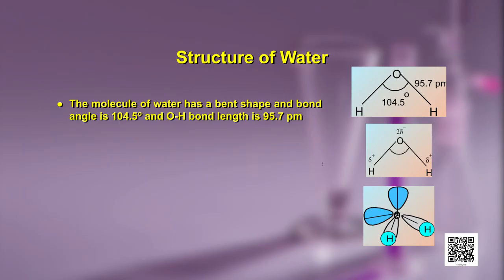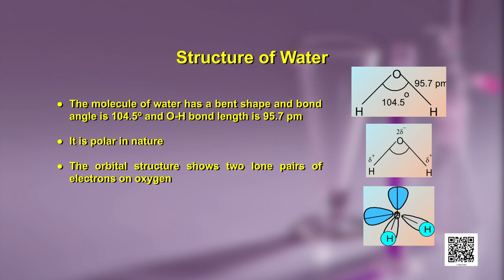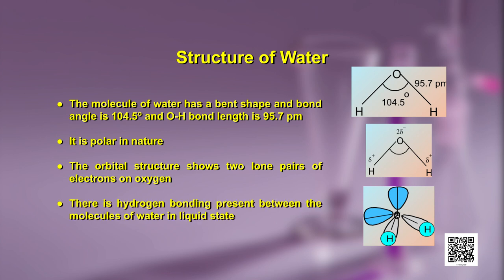Let us now focus on the interesting aspects of the structure of water. The molecule of water has a bent shape, with a bond angle of 104.5 degrees and an O-H bond length of 95.7 picometers, as shown in the structure here. Water has a polar nature, with a partial positive charge on the hydrogen atoms and a partial negative charge on oxygen. The orbital structure shows 2 lone pairs of electrons on oxygen. Hydrogen bonding is present between molecules of water in the liquid state. The crystalline form of water is ice, whose density is less than that of water. In winters, ice on the surface of lakes and water bodies provides thermal insulation for aquatic life, which is of great ecological importance.